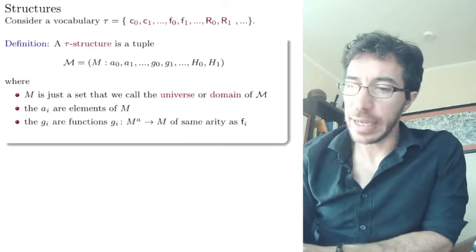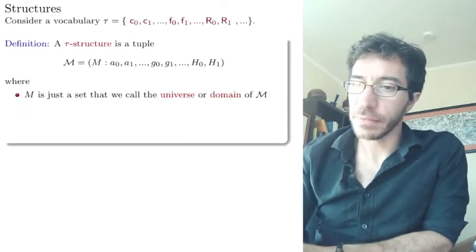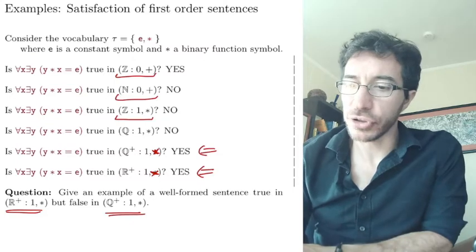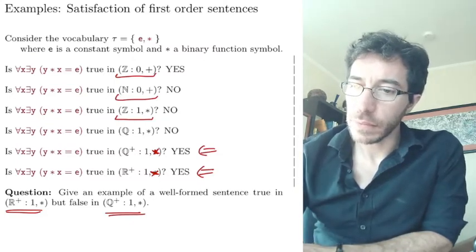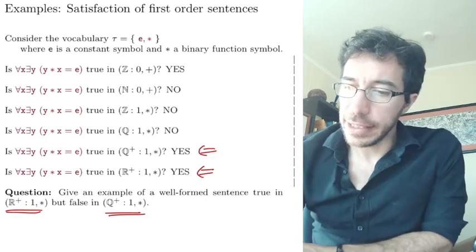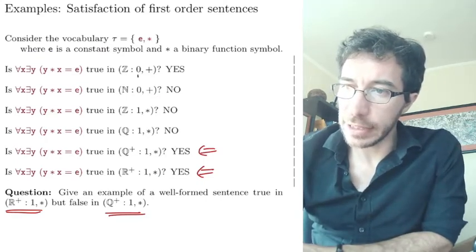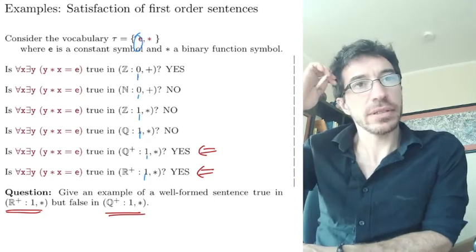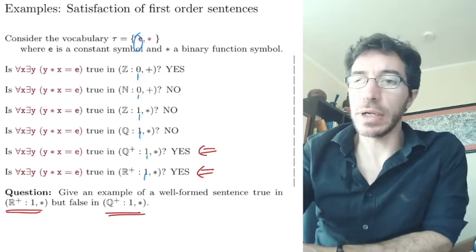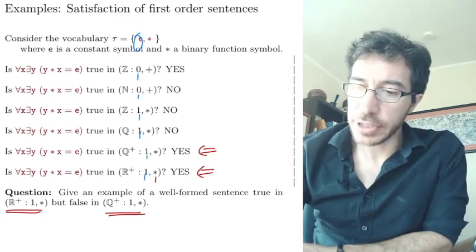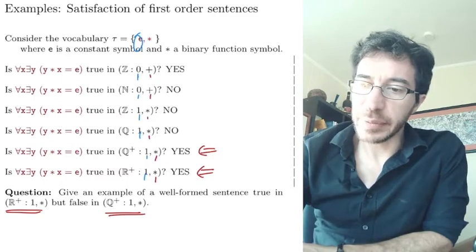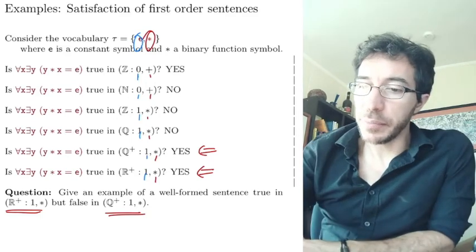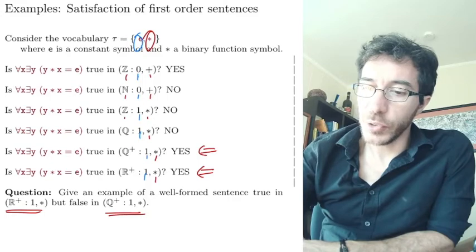We're going to define this formula in a second. Let's look back at the examples that we had in the previous slide right here. So see here we have a bunch of structures. And we are essentially like this line, this first thing up here is telling us how to interpret e. So all of these are the interpretations of e. Sometimes we chose zero, sometimes we chose one. And all of these operations is times, times, times, times, plus, plus. These are the interpretations of the star. Because you choose any function to interpret the star. And then these are the domains: Z, N, Z, Q, Q, R. This is the domain.